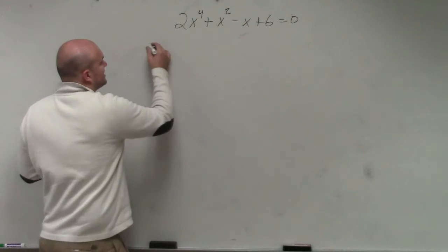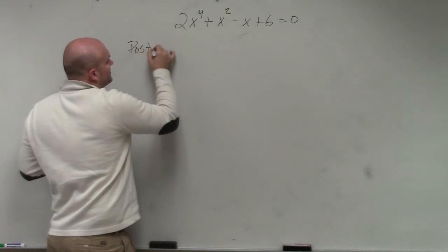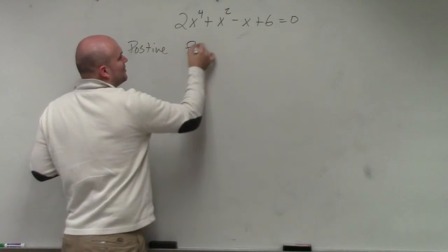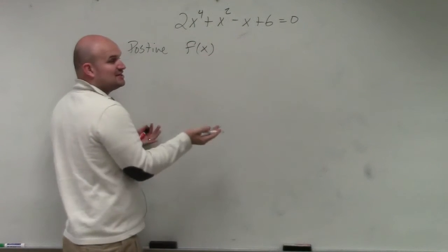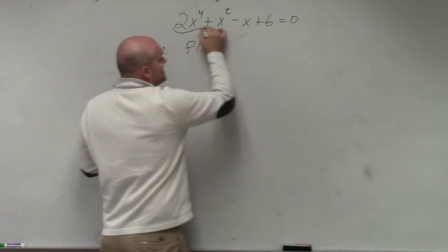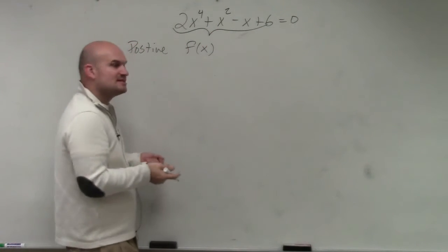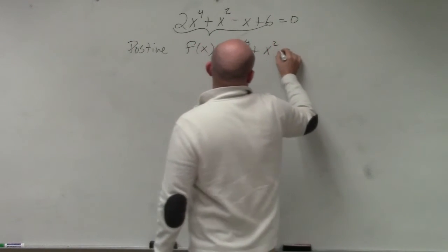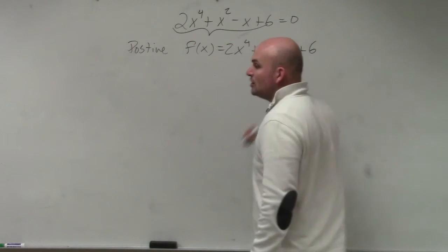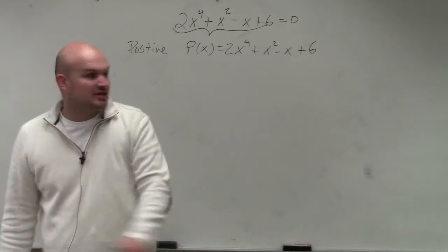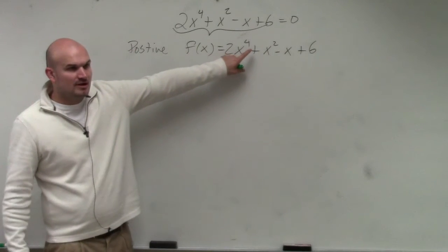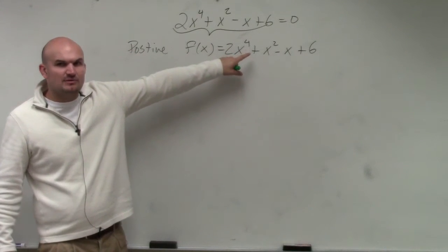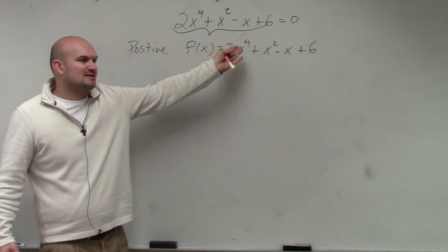So if you guys remember for this, to find the positive, all you're simply going to do is take f of x, find the number of sign changes of f of x. So f of x basically just represents the polynomial: 2x to the fourth plus x squared minus x plus 6. For long division and synthetic division, if we were missing a term, we included 0x, right? But we just wrote it as plus 0x.